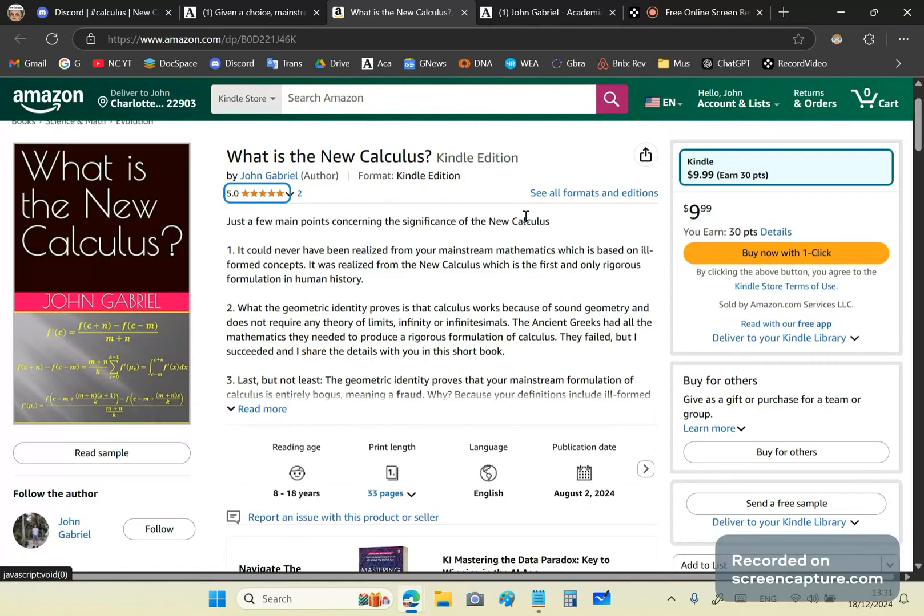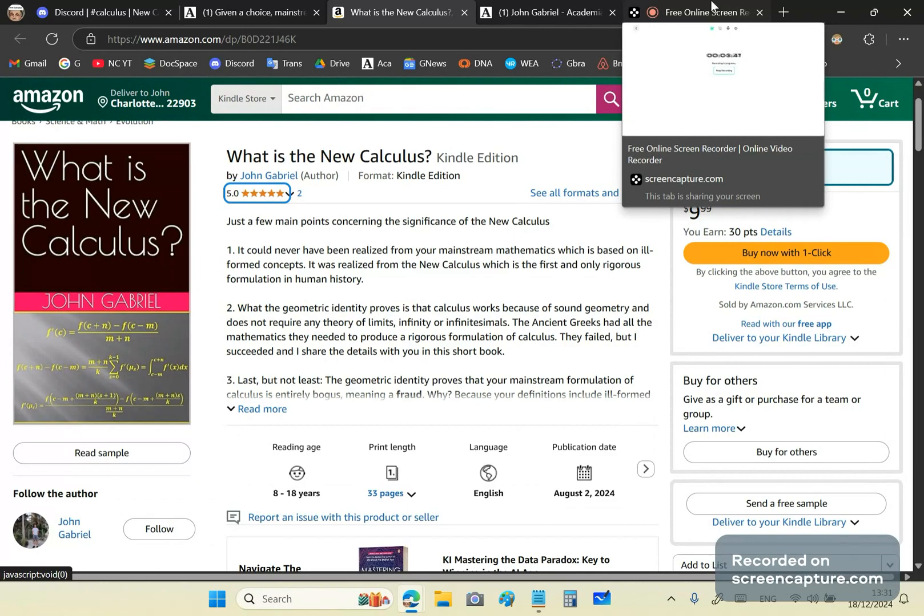I'm John Gabriel, and this is new calculus channel. If you're not already a subscriber, click like, become a follower on academia.edu and join my members only channel for $4.99 a month. Till next time, goodbye.